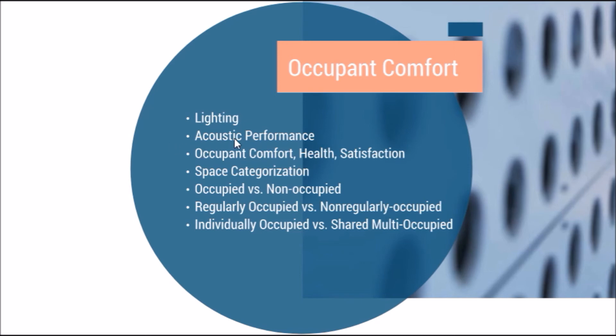For acoustic performance, we want to use absorptive ceiling tiles, quieter HVAC systems, and specialized wall framing techniques. This should all be done early in the design stage because it's much more costly to replace later. For overall occupant health and satisfaction, we want to provide system controllability, views to the outside world, and thermal controls. Building automation should include occupancy sensors and operable windows, so that when it's nice and breezy out, people can open a window and the HVAC system turns off.